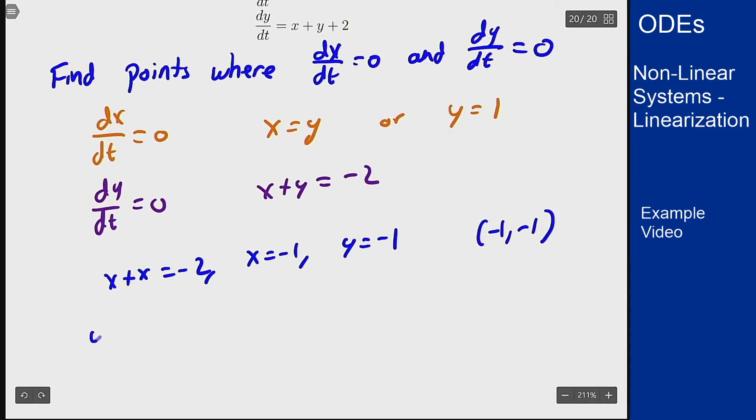If y is 1 then I know that x plus 1 must equal minus 2 so x is minus 3 giving me the point (-3, 1). So we have two equilibrium solutions here.